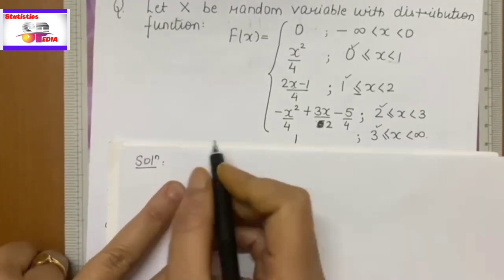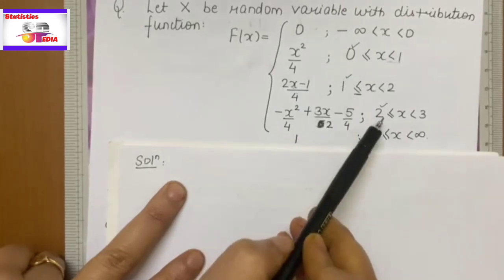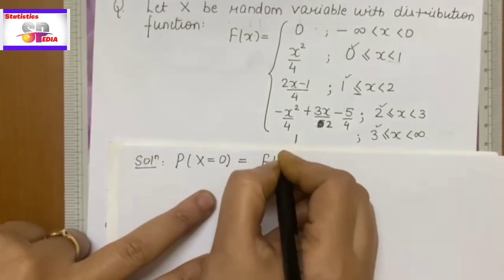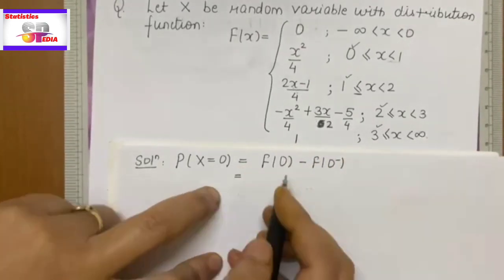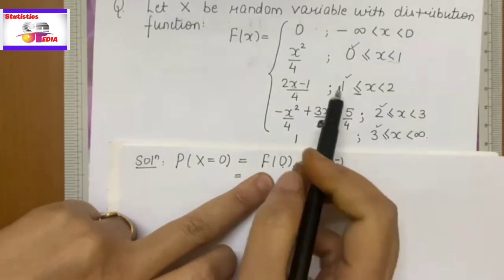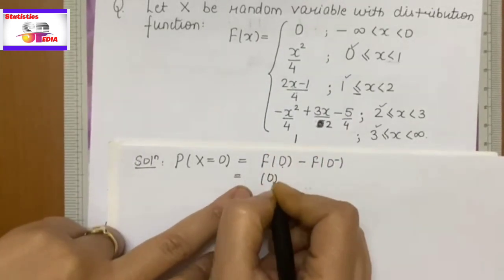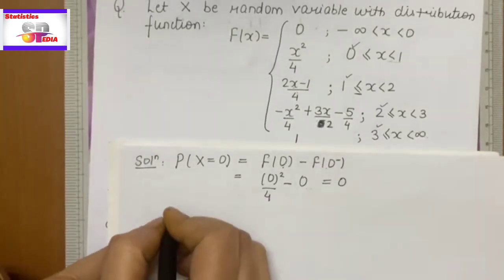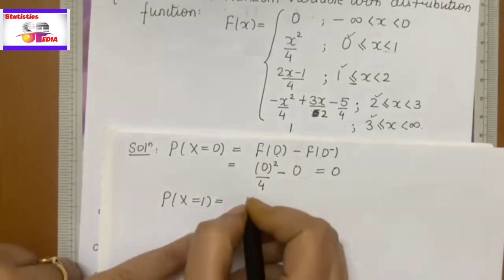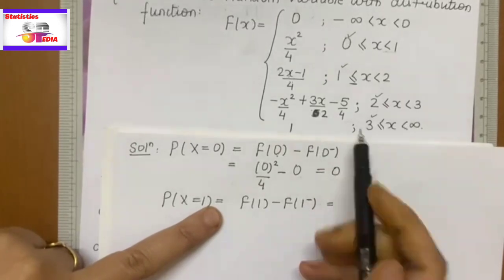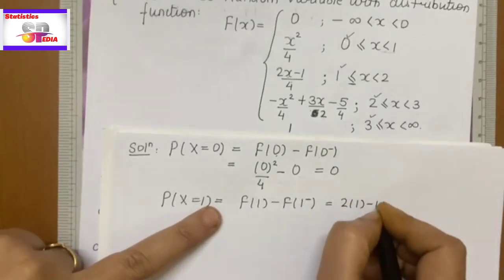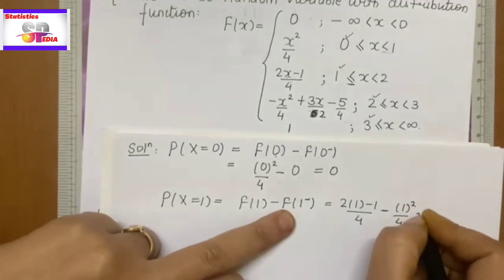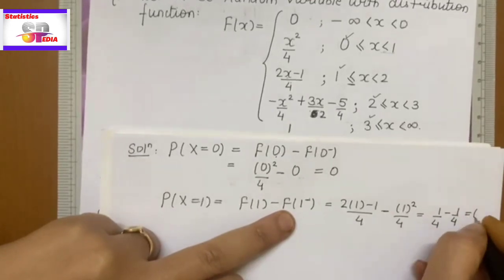What are we doing here? Finding the probability at the end points. The end points are 0, 1, 2, and 3. First, probability at point 0: F(0) minus F(0 minus). F(0) equals 0 — the function is x²/4, so this is 0²/4. And for less than 0, the value is 0. So this equals 0. Next, at point 1: F(1) minus F(1 minus). F(1) uses the function — just put the value: 1 minus F(1 minus). For x less than 1, the function is x²/4, so we get 1/4 minus 1/4, which equals 0.